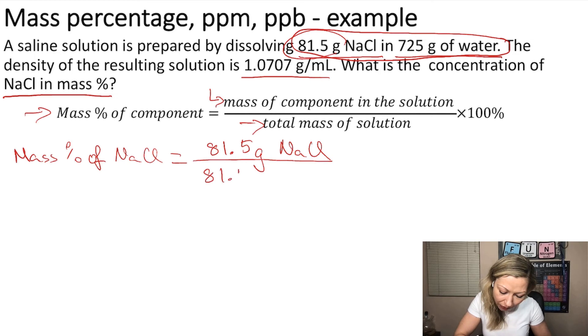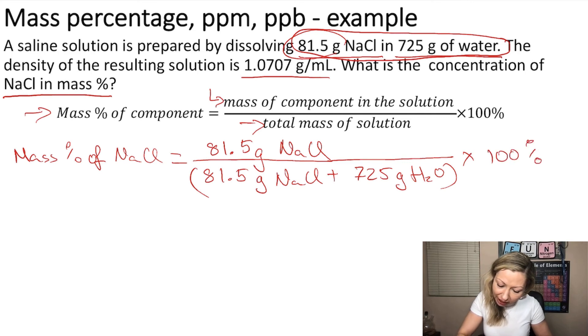So NaCl is 81.5 grams plus 725 grams of H2O multiplied by 100.